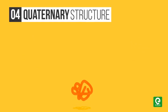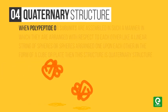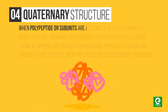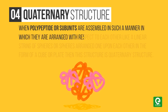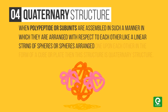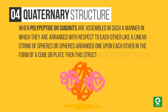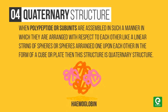Quaternary structure: when polypeptide subunits are assembled in such a manner that they are arranged with respect to each other — like a linear string of spheres, or spheres arranged one upon each other in the form of a cube or plate — this structure is called the quaternary structure. An example is the structure of adult human hemoglobin.